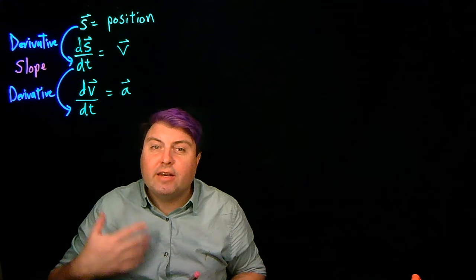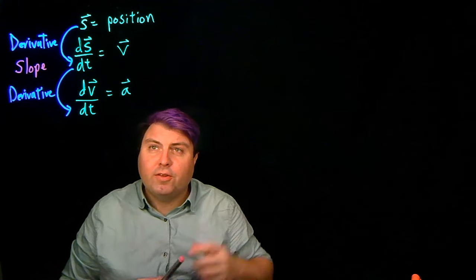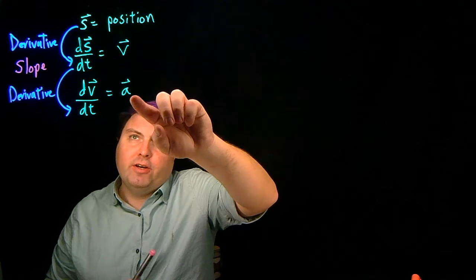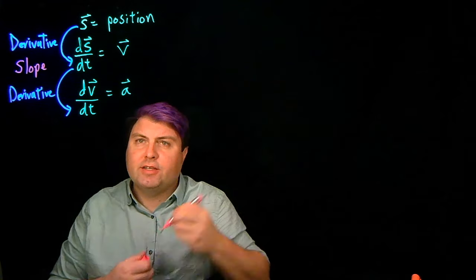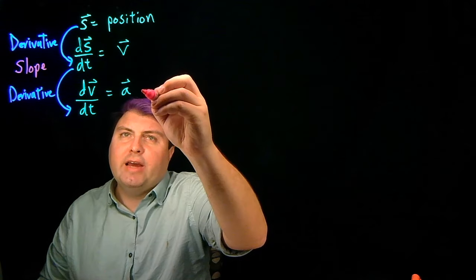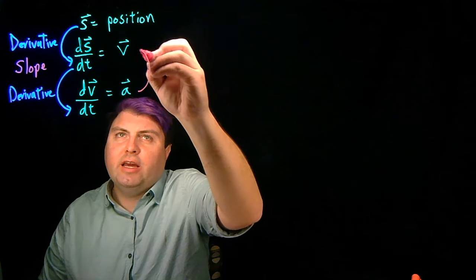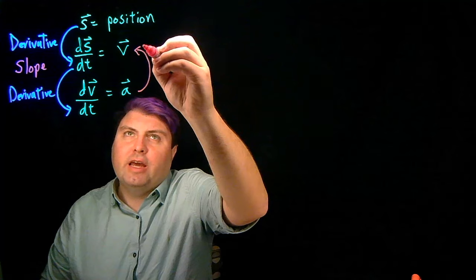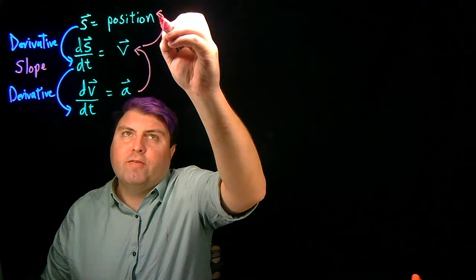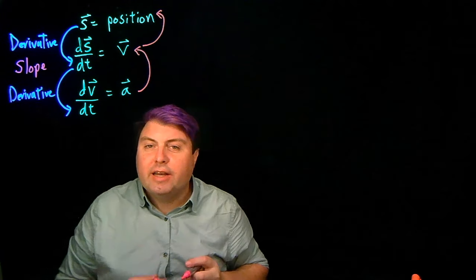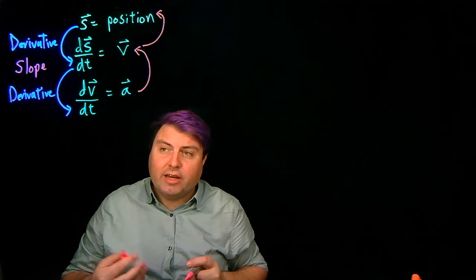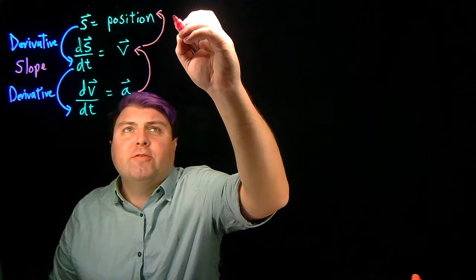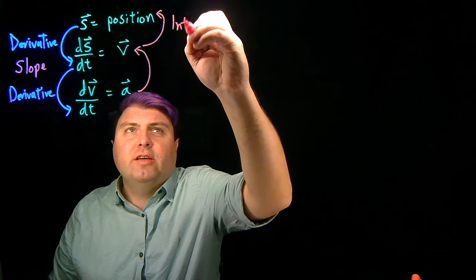If we want to go the other way — say if we know the acceleration and we want to find the velocity — then we have to take an antiderivative. We can call the antiderivative the antiderivative, or oftentimes we can instead call it the integral.